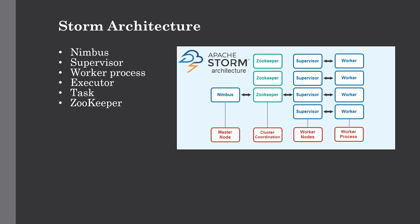Nimbus is the master node of the Storm cluster and all other nodes are worker nodes. The master node is responsible for distributing tasks among all worker nodes, assigning tasks to worker nodes, and monitoring if any failure happens in the system. The nodes that follow instructions given by Nimbus are known as supervisors. They can have multiple worker processes and govern the processes for completing the tasks submitted by the client and assigned by Nimbus.